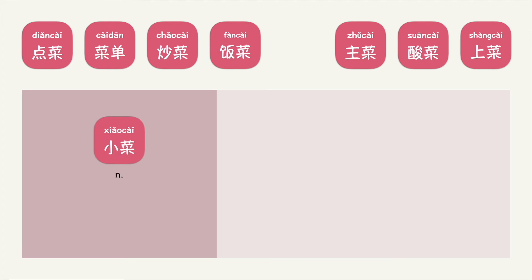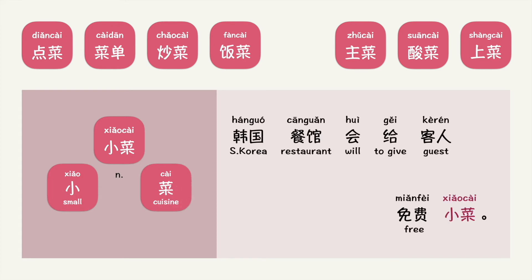小菜 is also a noun. 小 is small, 菜 is cuisine. Put into context, you can say: 韩国餐馆会给客人免费小菜。 — Small cuisine. What do you think 小菜 means? 小菜 refers to a side dish. Like it says in this example, Korean restaurants serve free side dishes. I also used 小菜 in another vocabulary building video on the word 小 meaning small — you can check out the link below.